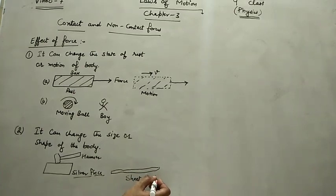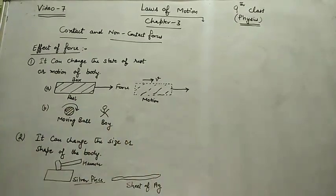So this silver piece can be converted to a thin sheet of silver. Ag is the symbol of silver, right? So now change in shape can be easily observed. Is that clear? This is about the effects of force.